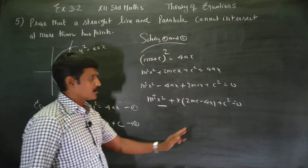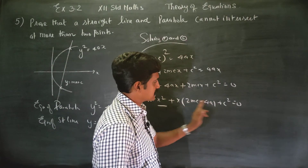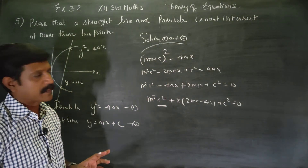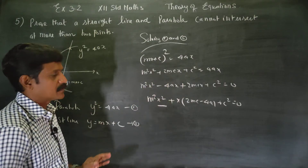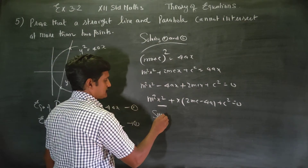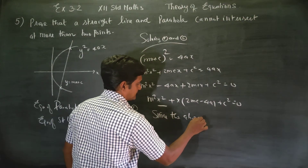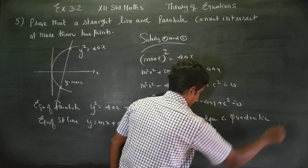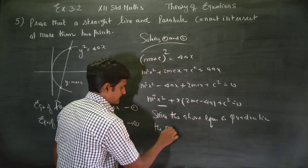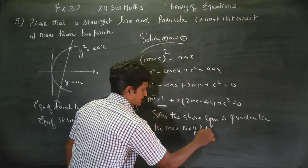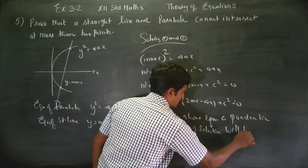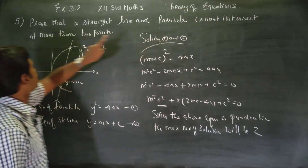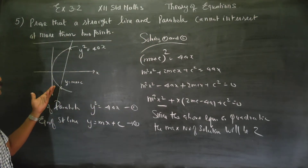This is a quadratic equation in x. A quadratic equation has a maximum of 2 solutions. Therefore, we get a maximum of 2 values of x. This proves that the straight line and the parabola cannot intersect at more than 2 points.